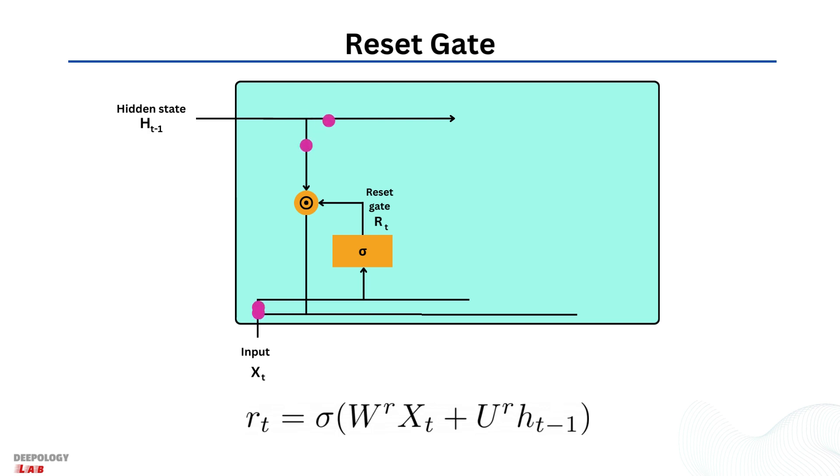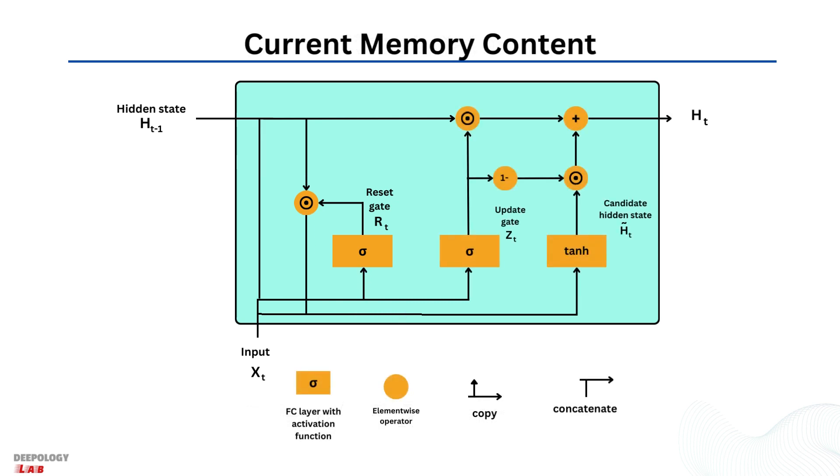It is important to note that the weights associated with the hidden layer at the previous time step and the current input are different for both gates. The values for these weights are learned during the training process.